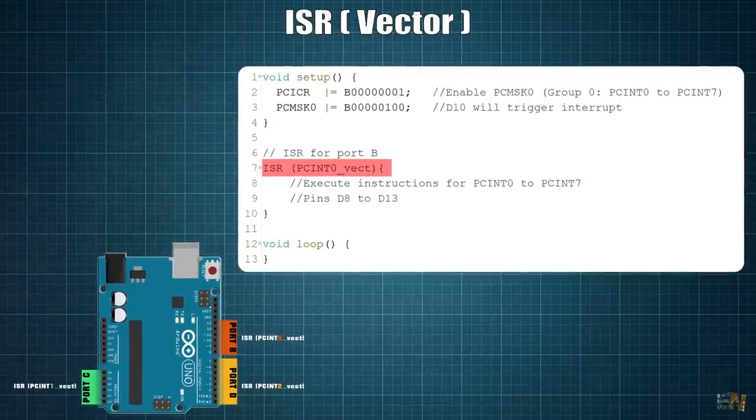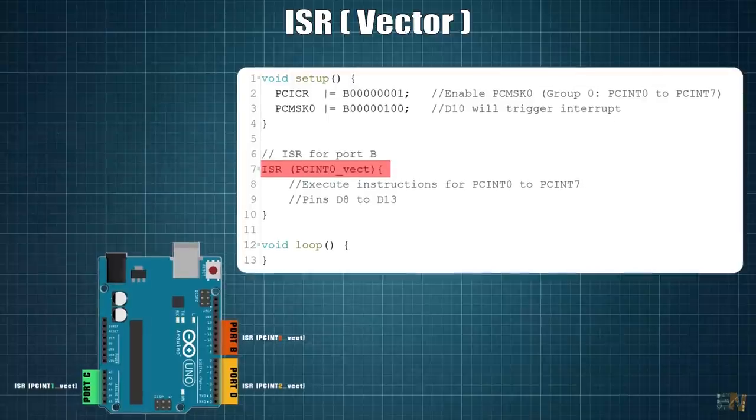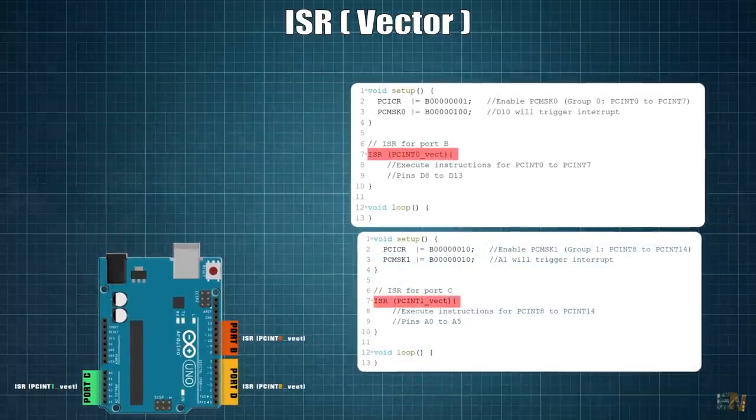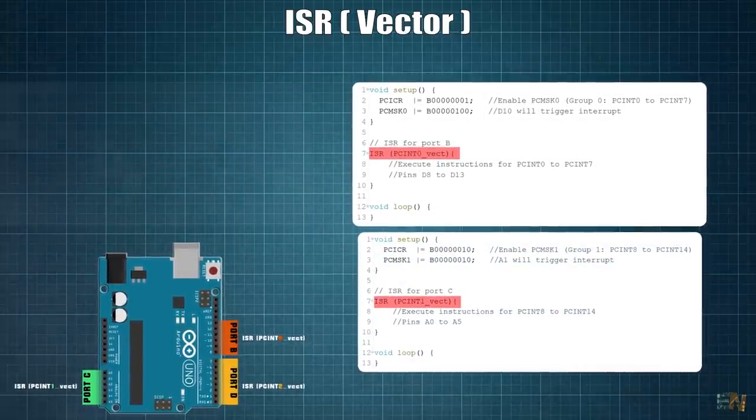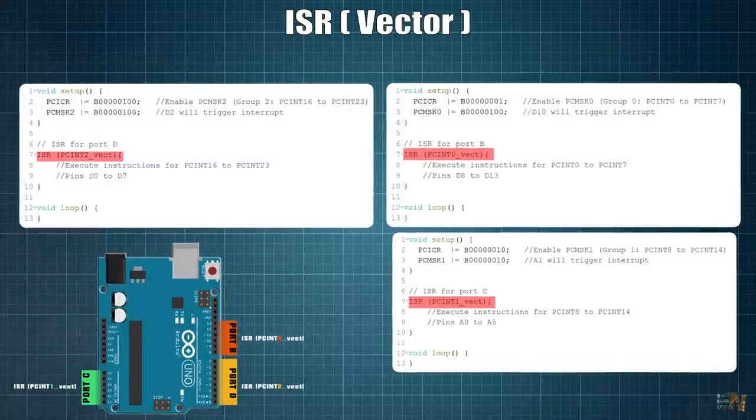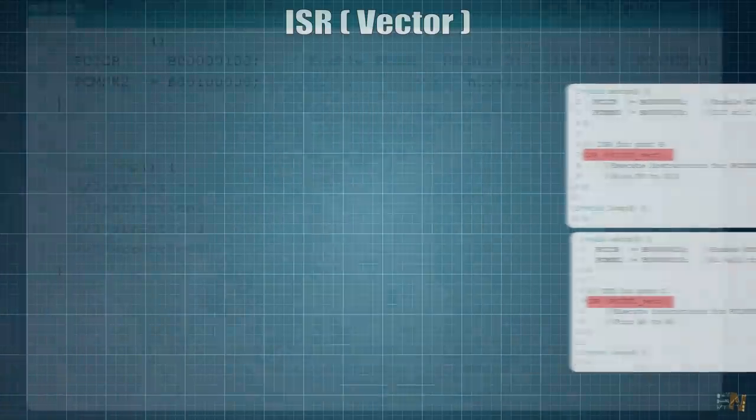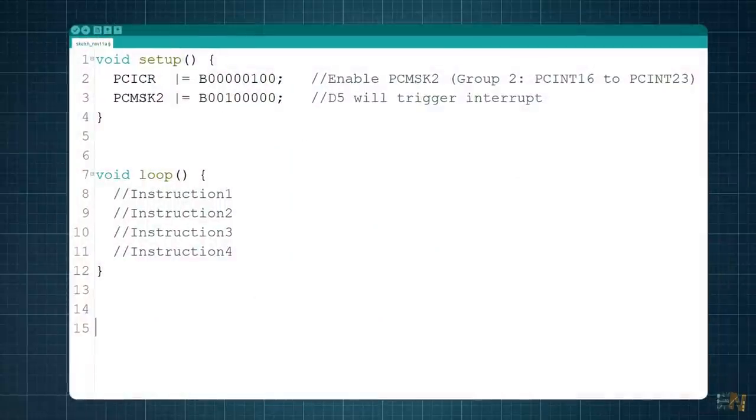In this case we have 3 vectors. PCINT0 vector for pins from D8 to D13, PCINT1 vector for pins from A0 to A5 and PCINT2 vector for pins from D0 to D7. So in the example before, we have set digital pin D5 to trigger interruptions. So we have to add a code for the PCINT2 vector ISR.